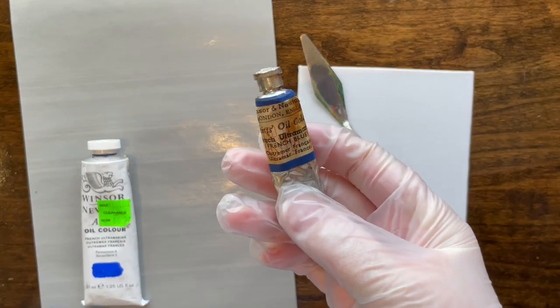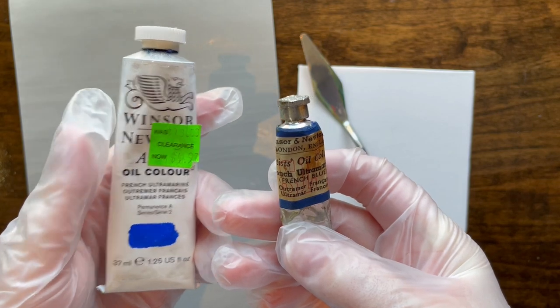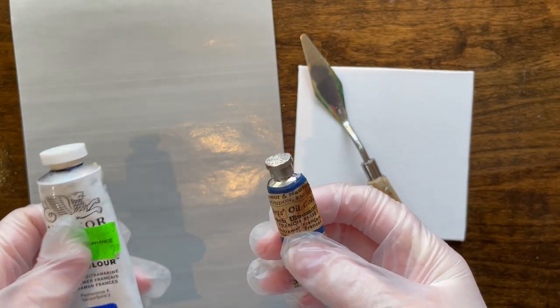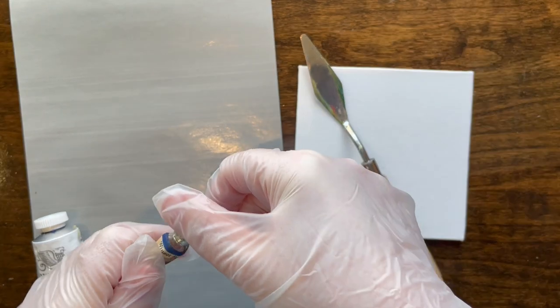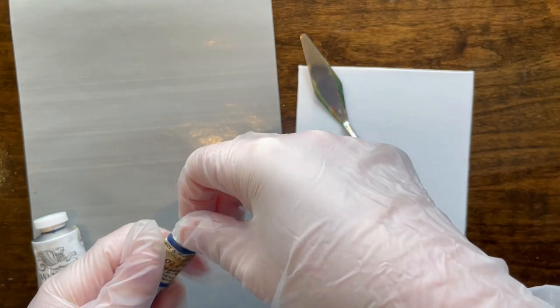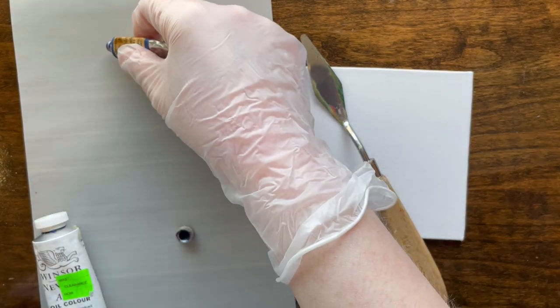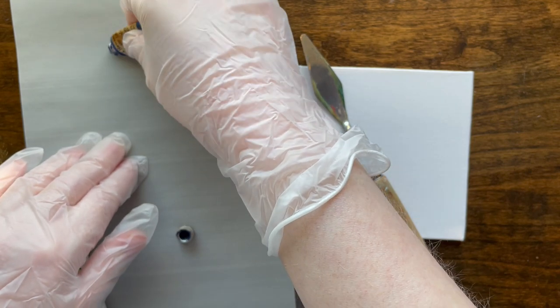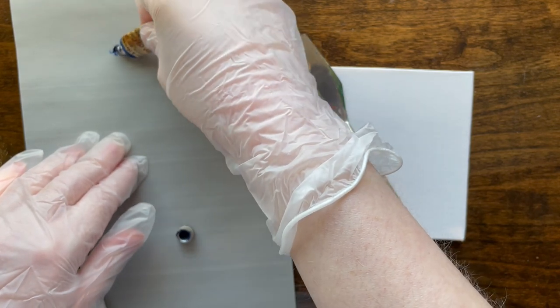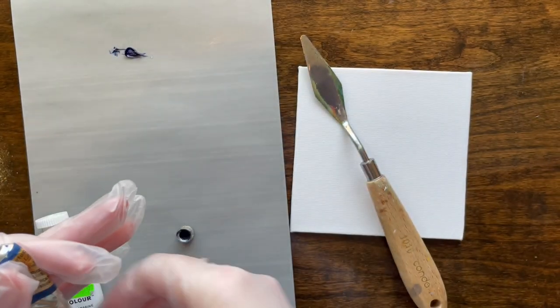But yes, we got some French Ultramarine and we got the modern French Ultramarine and we'll see how close they are. This is not the original cap. So we got a little bit of blue. A little bit of blue. It's not coming out because this is an old tube. That's as good as that's gonna get.